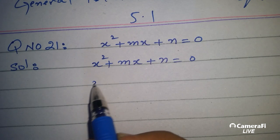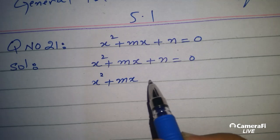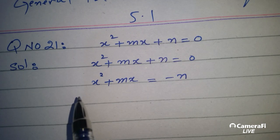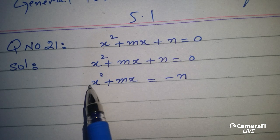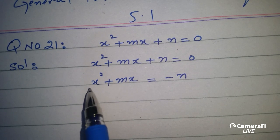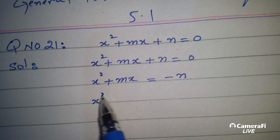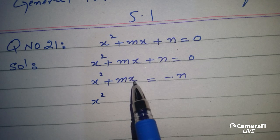We will start with the constant term on the same side. This is minus. After that we have to ensure that the square term's coefficient is 1. This is the first step. The next step is we have to take the x coefficient.